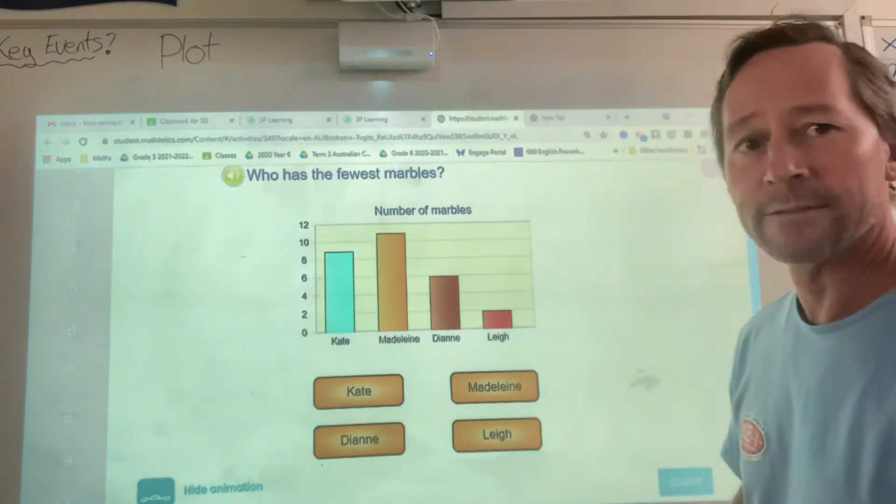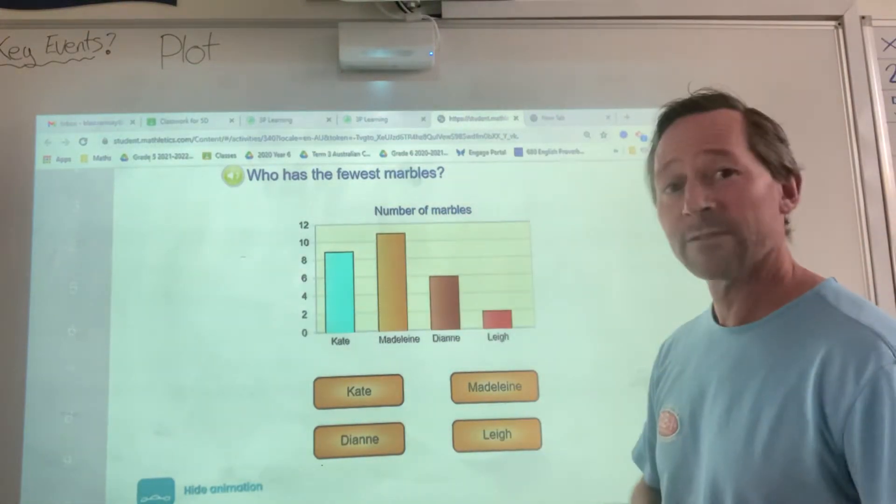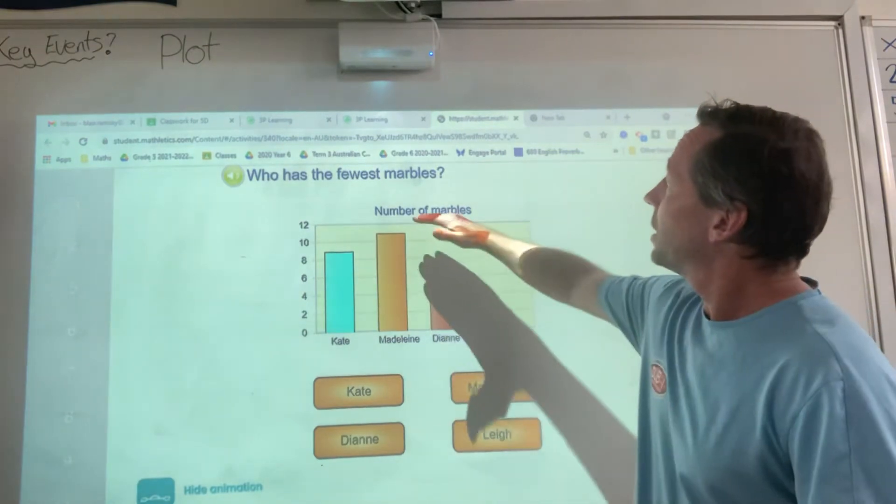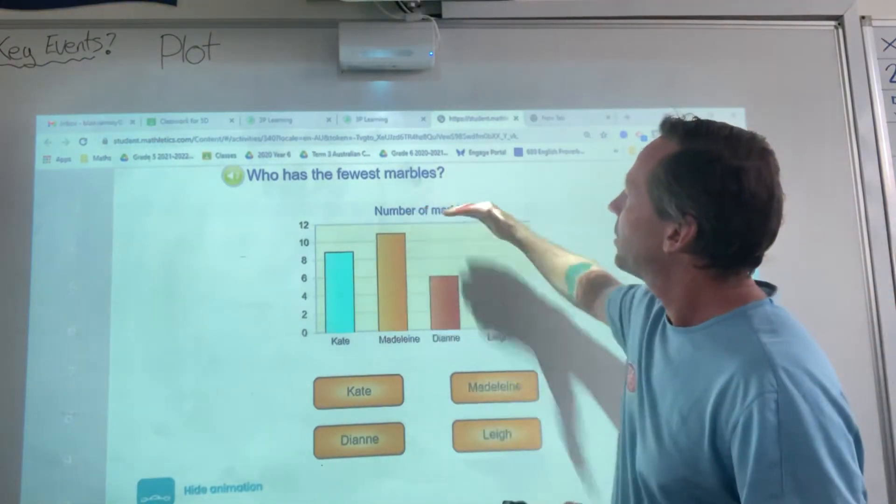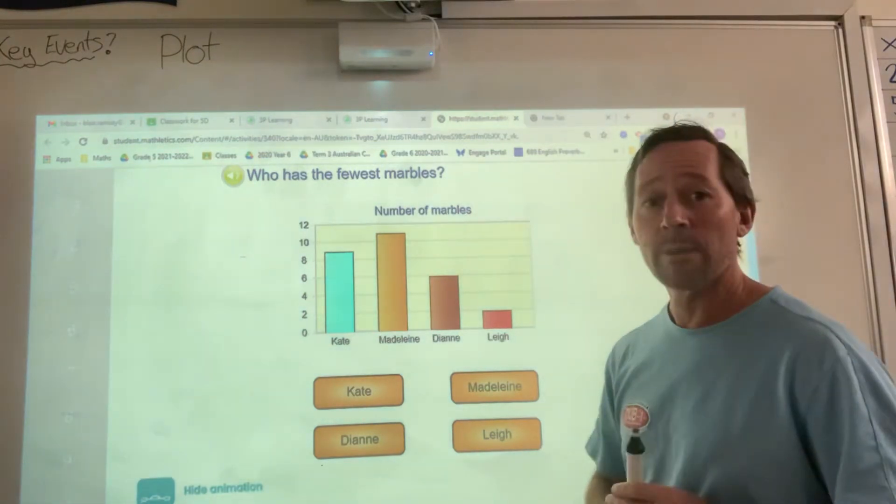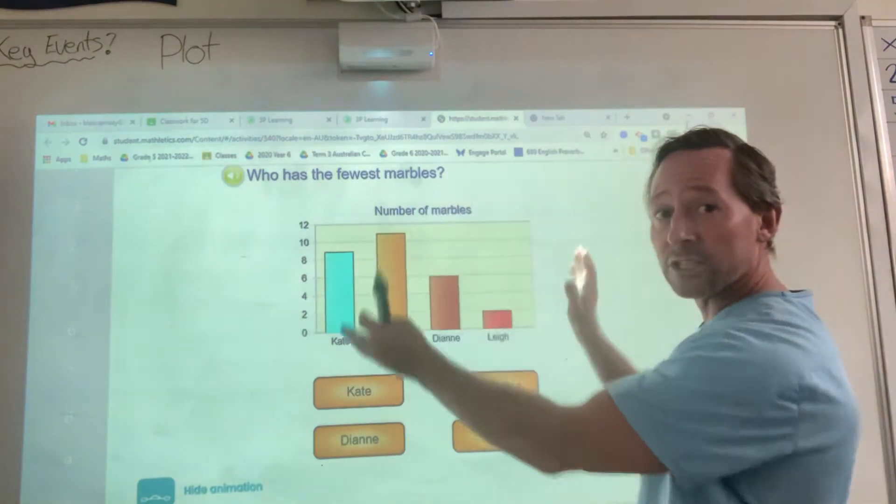Hello, we're looking at some graphs here. This particular graph is a bar graph, sometimes referred to as a column graph. Here I have a title, number of marbles. So that's the title, this is what this graph is all about.